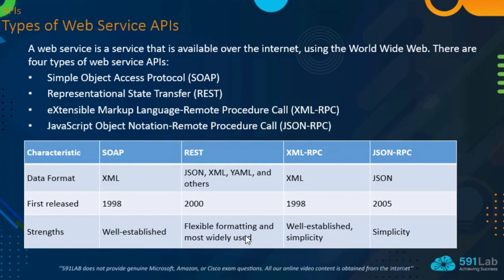A web service is a service available over the internet using the worldwide web. There are four types of web service APIs: Simple Object Access Protocol (SOAP), Representational State Transfer (REST), XML-RPC, and others. The most popular of these is REST, which is very flexible in formatting and the most widely used.